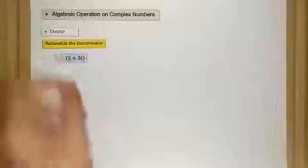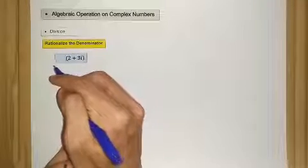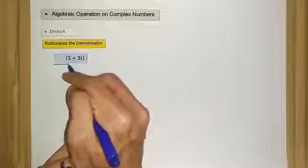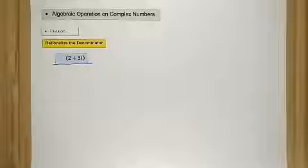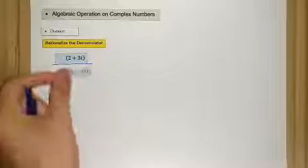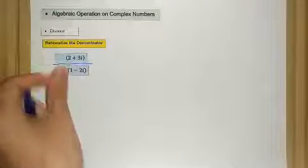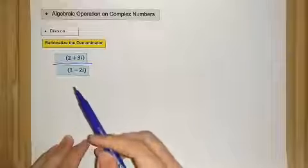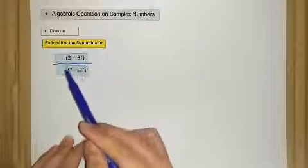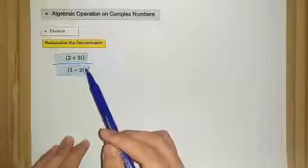Let's say we have 2 plus 3i divided by 1 minus 2i. We will focus on the complex conjugate of the denominator.